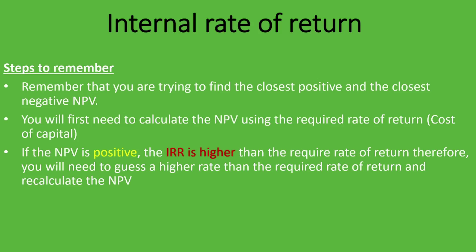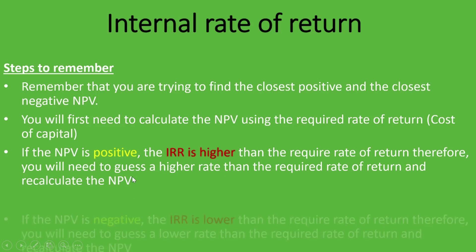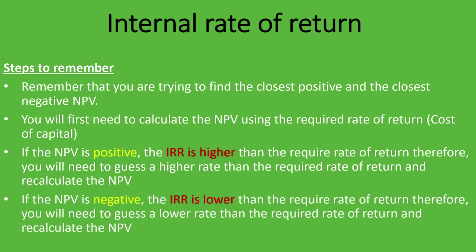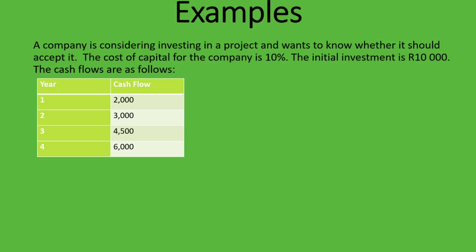If you calculate the NPV using the given required rate of return and it's positive, the IRR is higher — so you guess a higher number and recalculate the NPV. If the NPV is negative, the IRR is lower than the required rate of return, so you guess a lower rate and recalculate. It may not make sense now but it will once we go through the example.